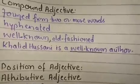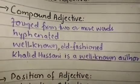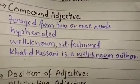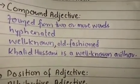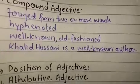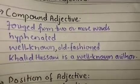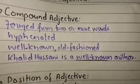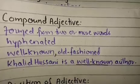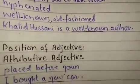A compound adjective is formed by two or more words, and they are usually hyphenated. For example, 'well' and 'known' — if written separately, 'well' would be a descriptive adjective and 'known' would be a verb. But combined as 'well-known,' it becomes a compound adjective. For example, 'Khalid Hussaini is a well-known author' — 'well-known' is our compound adjective here.